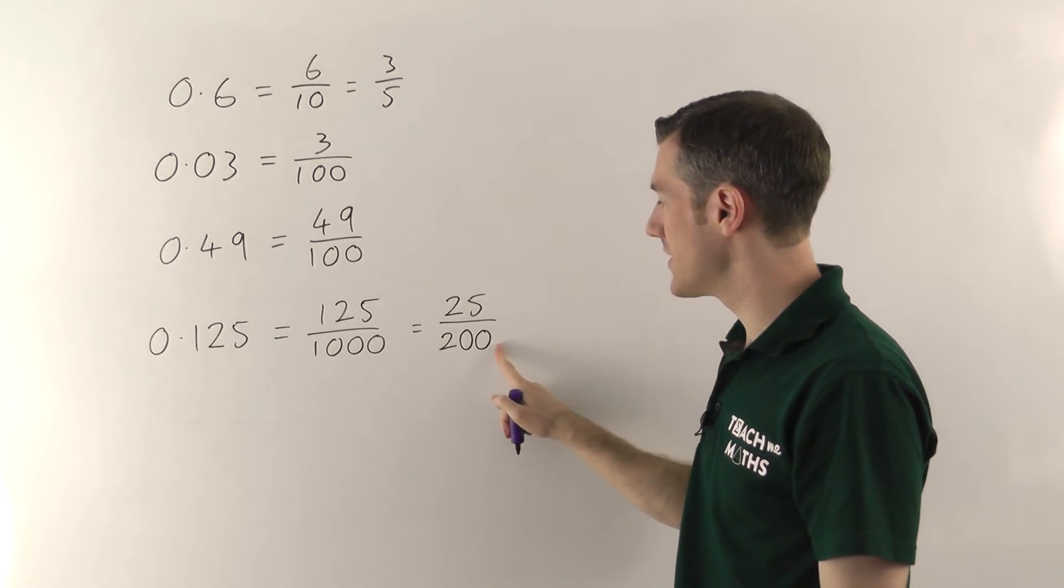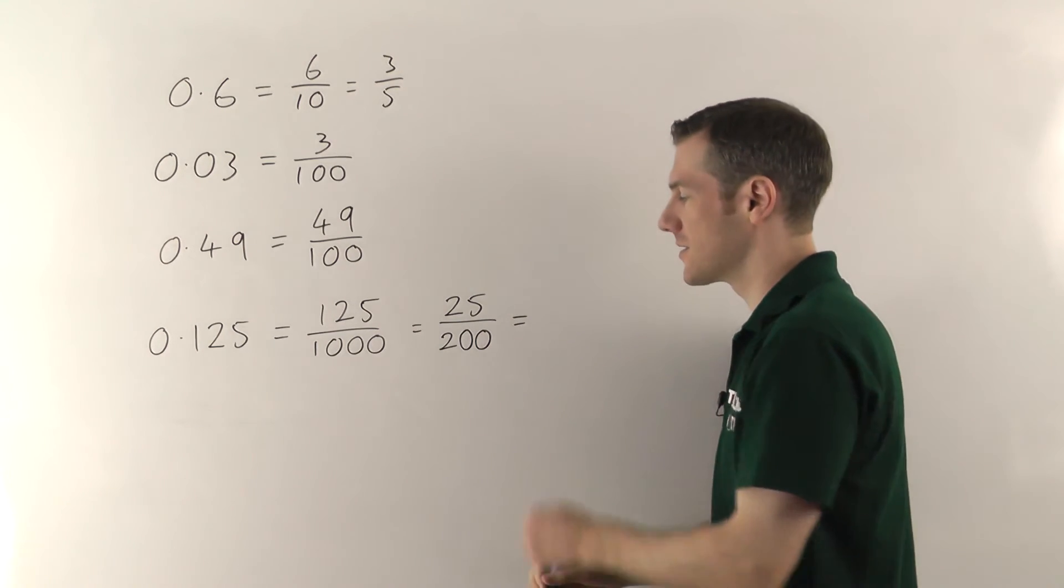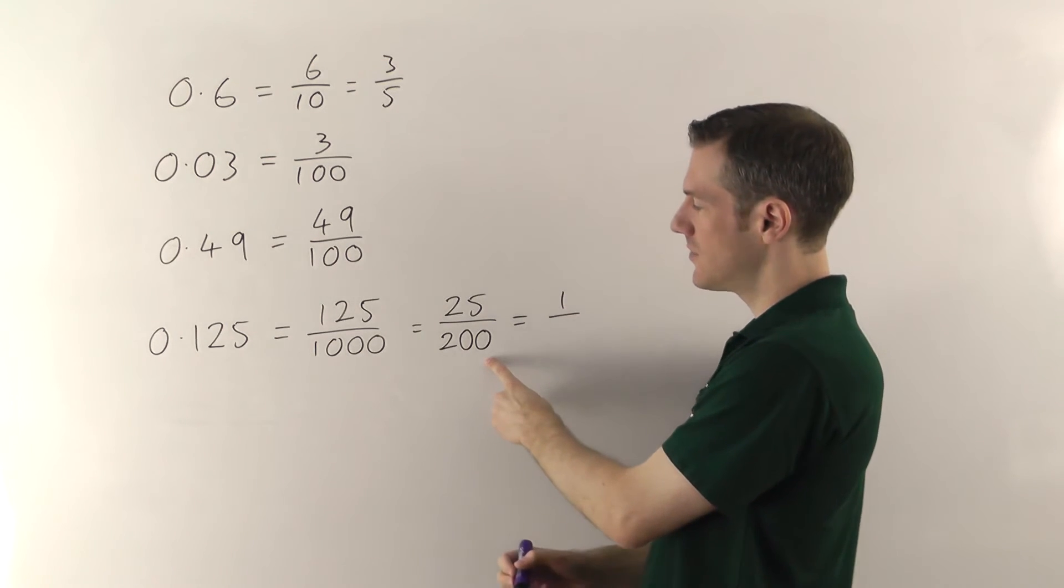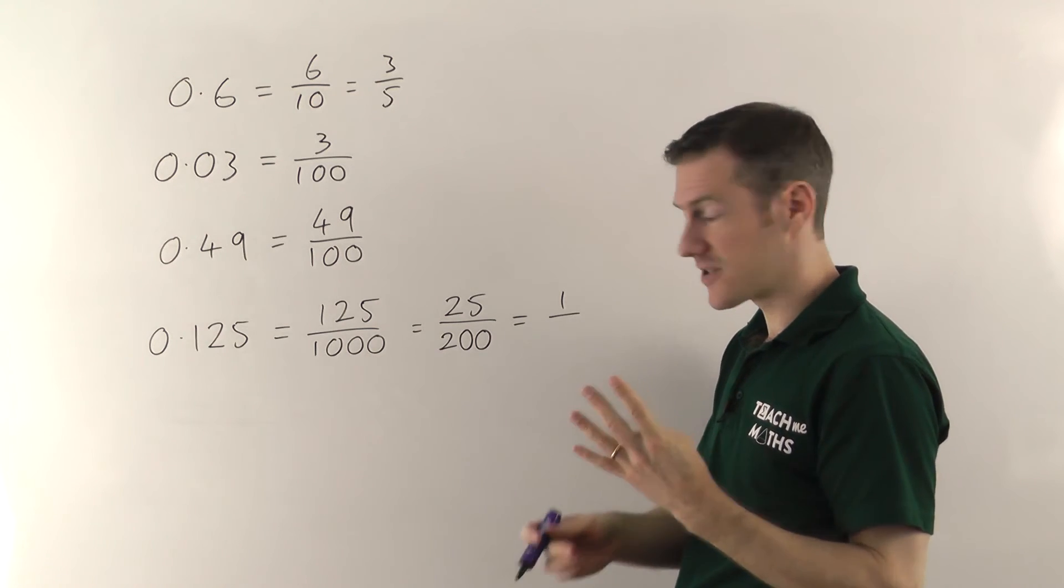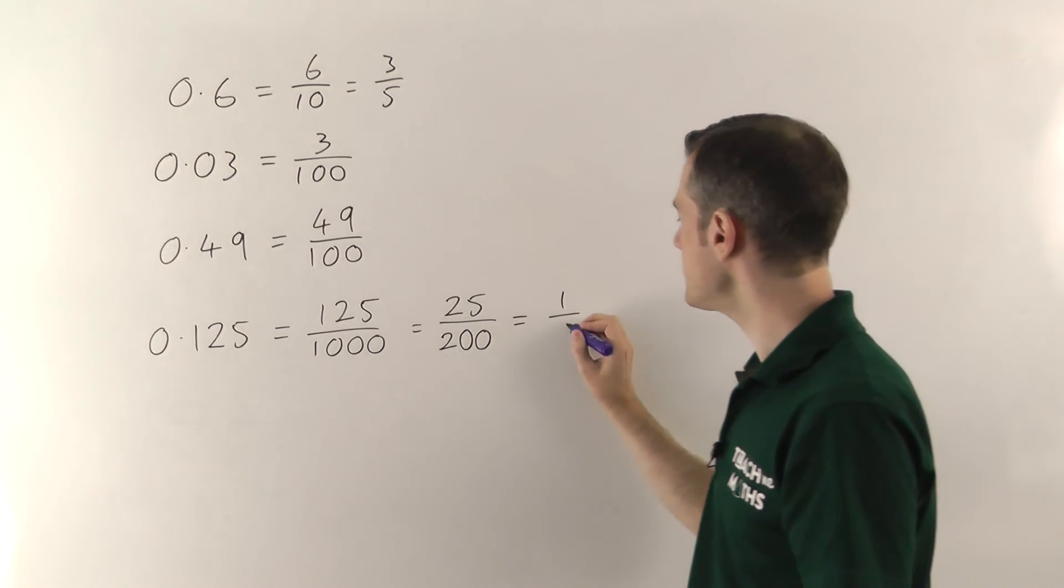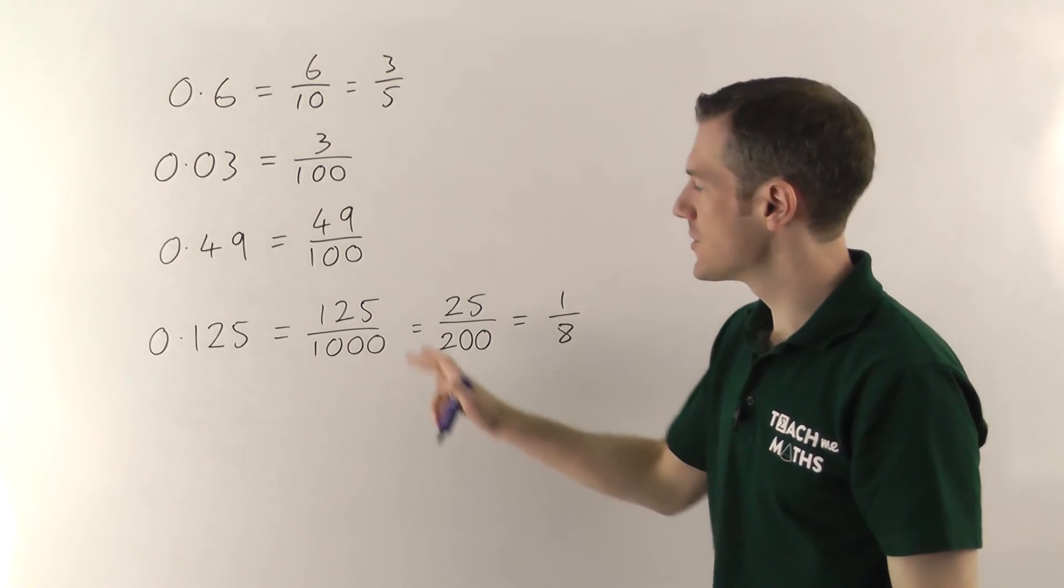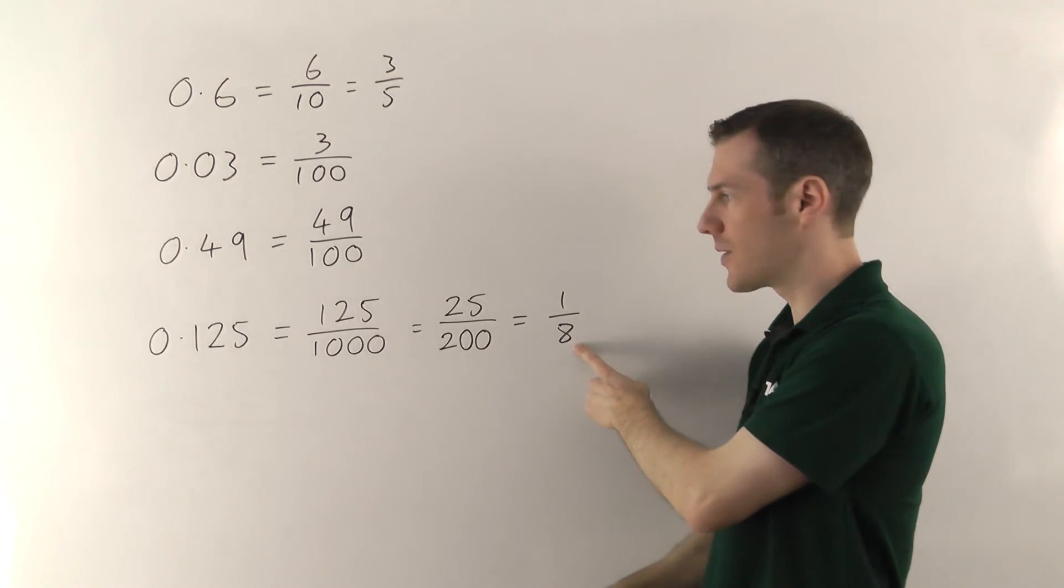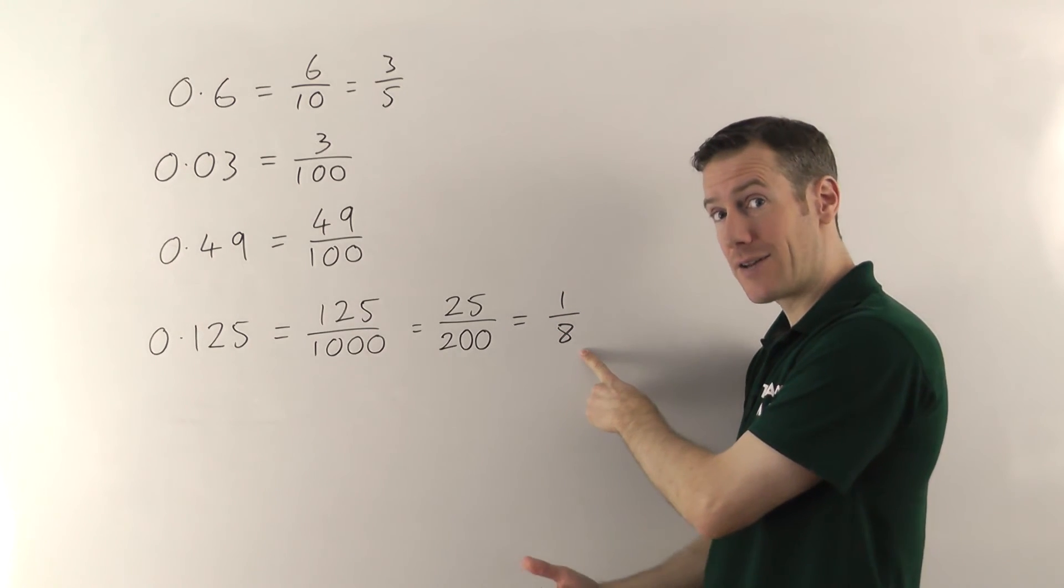Now, 5 will go into both of these. In fact, 25 will go into both of these. That might be easier to do. So 25 goes into 25 once. And 25 into 200. Well, 25 into 100 would go 4 times. 4 lots of 25 makes 100. So into 200, 2 lots of 4 makes 8. So there are various ways you can cancel it down. But as long as you divide the top and the bottom by the same number, you'll be fine. And you just keep going until you can't go any further. So 0.125 as a fraction would be an eighth.